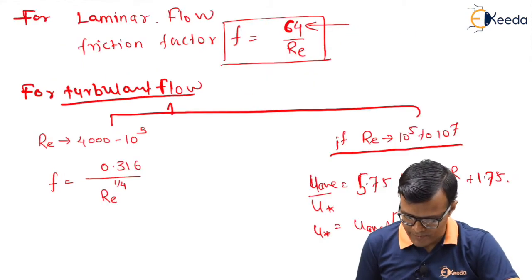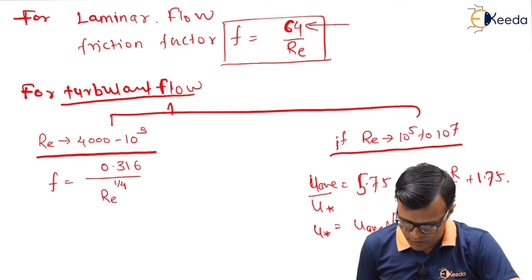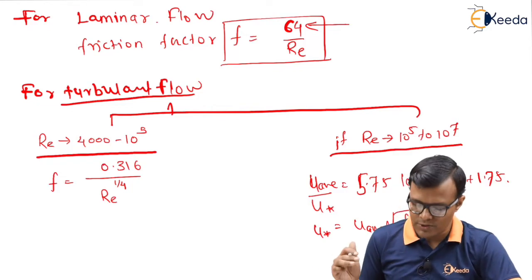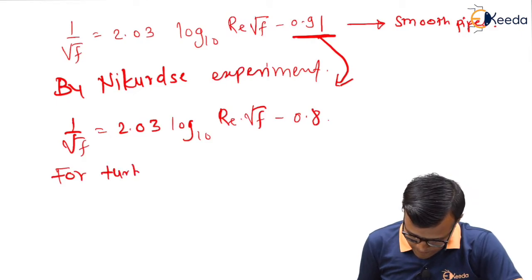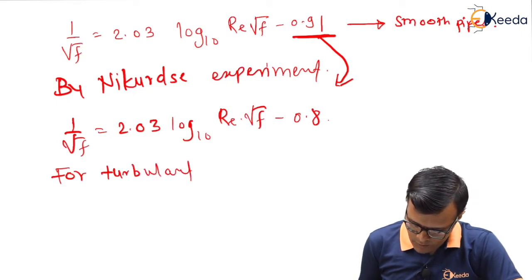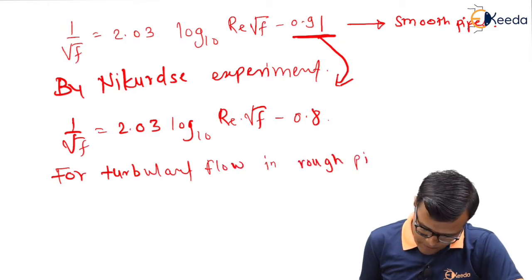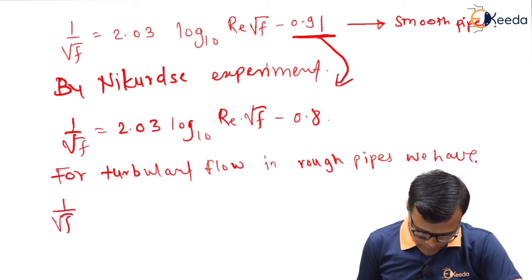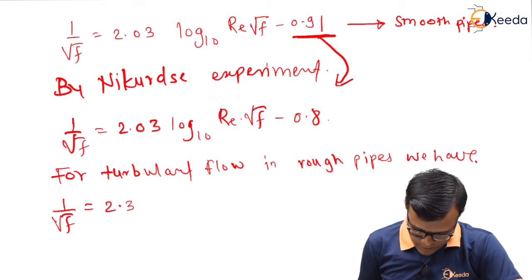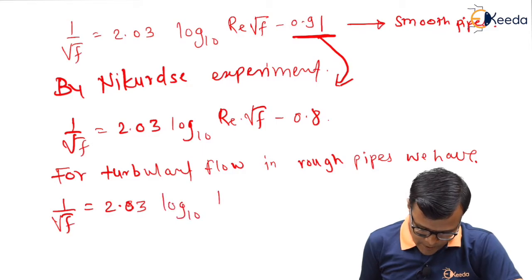For turbulent cases through rough pipe, we have seen turbulent flow, there are two types: 4000 to 10 raise to 5 and 10 raise to 5 to 10 raise to 7. So for turbulent cases, for turbulent flow in a rough pipe, we have